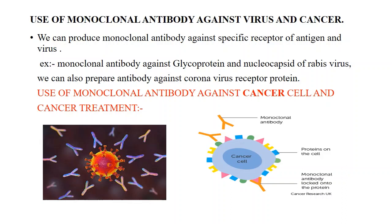We can use monoclonal antibodies for both detection and treatment of cancer cells. The cancer cell contains different types of receptors, but the monoclonal antibody recognizes only the particular epitope or particular receptor of the cancer cell — for example, a triangular receptor — through which we can detect and also treat cancer.